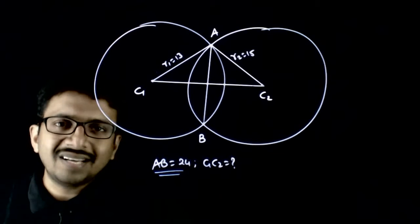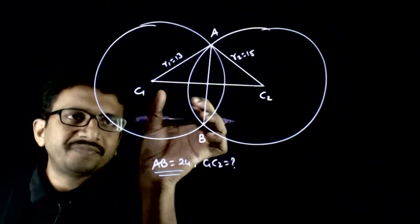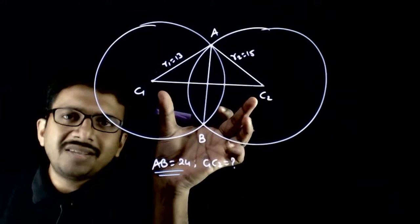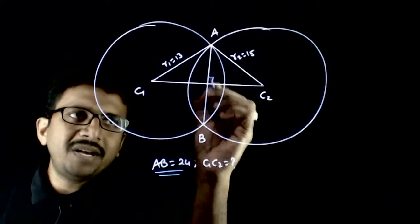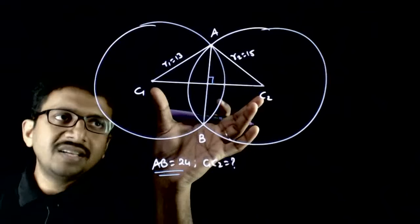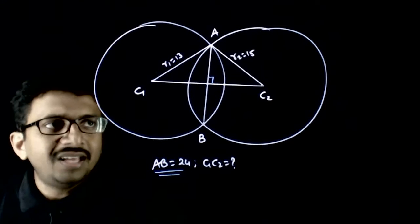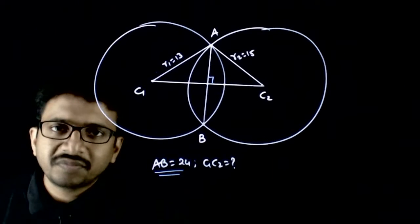What I do is, the first concept that I apply is: the line joining the centers is perpendicular to the common chord. We have a theorem in circles which says that the line joining the centers of the circles is perpendicular to the common chord.